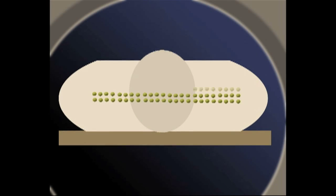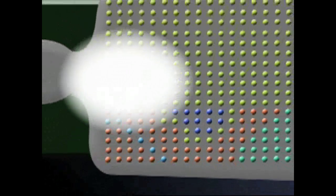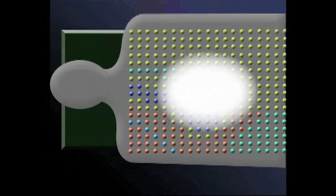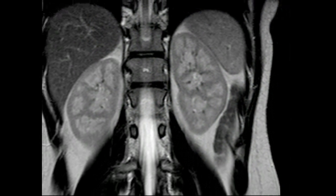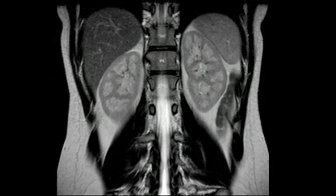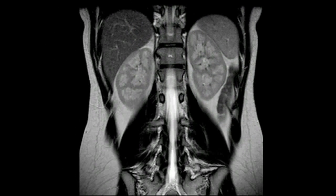You record all of these data. And when you finish, you can use what's called a Fourier transform — a mathematical technique — to work back to how strong the signal was in each of these voxels. And so this is how the image is developed.